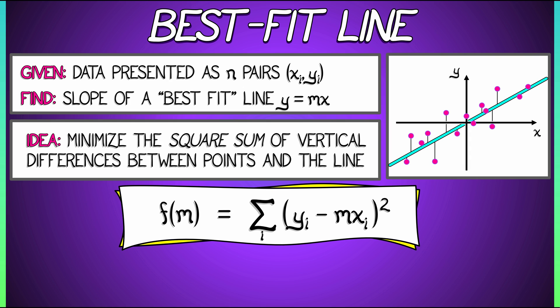This m is the slope. And what we're doing is we're taking the y-value of the data point yi and then subtracting from it the y-coordinate of the corresponding point on the line, mxi, and then we square that difference.